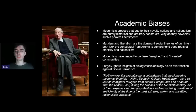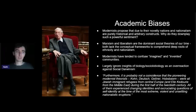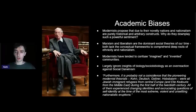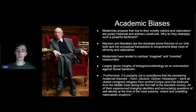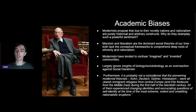Academics' largely ignoring sociobiology is an overreaction against social Darwinism. Ideas of racial science are abhorrent to the modern academy, so they overcorrect — if anyone suggests a biological component to group behavior, they're dismissed. Gat also notes it's probably not a coincidence that pioneering modernist theorists — Kohn, Deutsch, Gellner, Hobsbawm — were all Jewish immigrant refugees from Central Europe, and Kedourie from the Middle East, during the first half of the 20th century. All experienced changing identities and excruciating questions of self-identity during the most extreme nationalist eruptions.